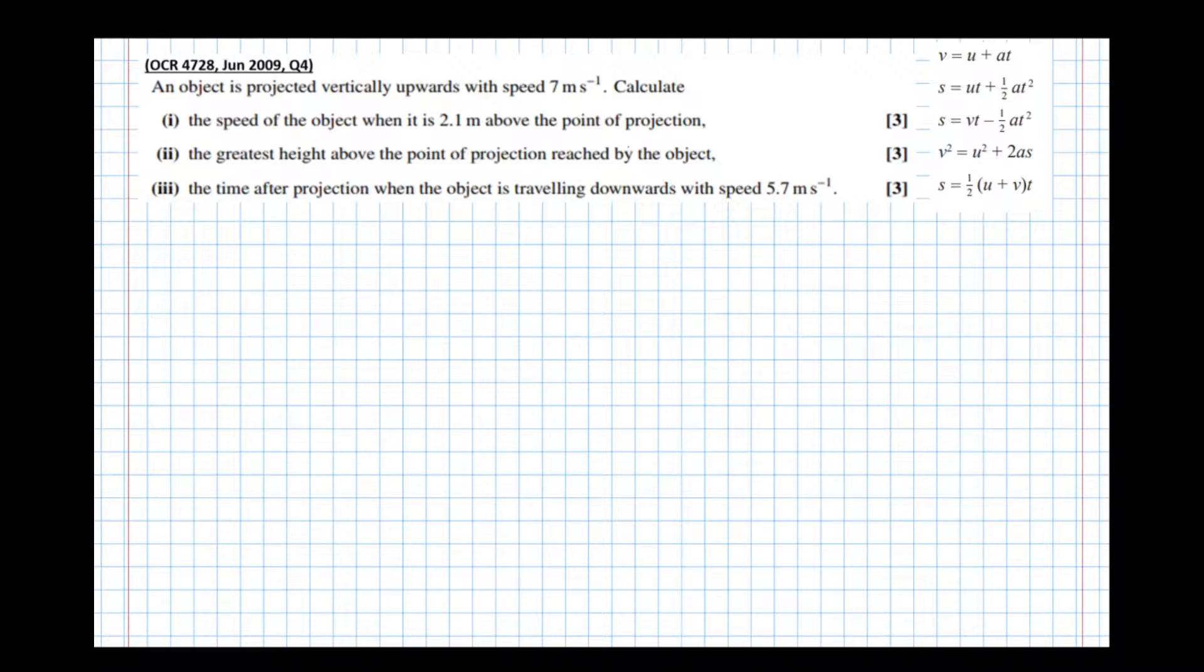But what we do need to know is what each of the letters means. So s is displacement, u is initial velocity, v is final velocity, a is acceleration, and t is time.